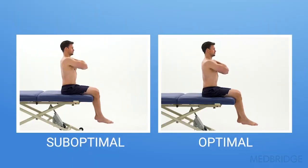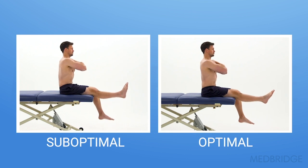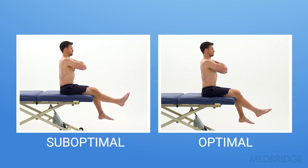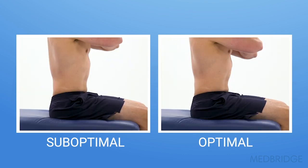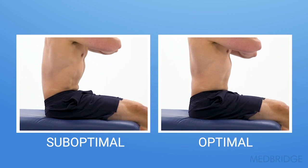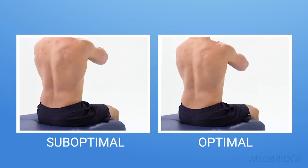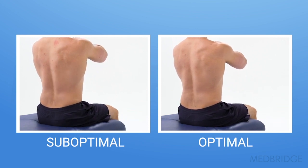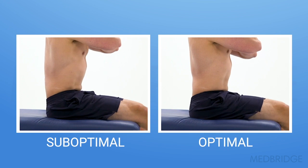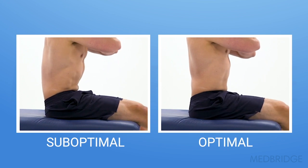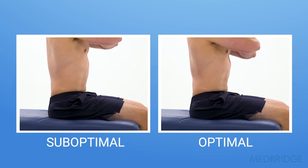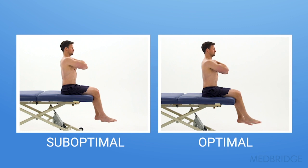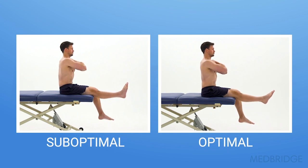Here you can see the two videos side by side. The video on the left shows how Aaron moves — a suboptimal movement pattern. The video on the right shows the optimal movement pattern. With the video on the left, as Aaron extends his knee, the pelvis posteriorly rotates and his lumbar spine flexes. On the right, as Aaron extends his knee, the pelvis and lumbar spine remain stable.